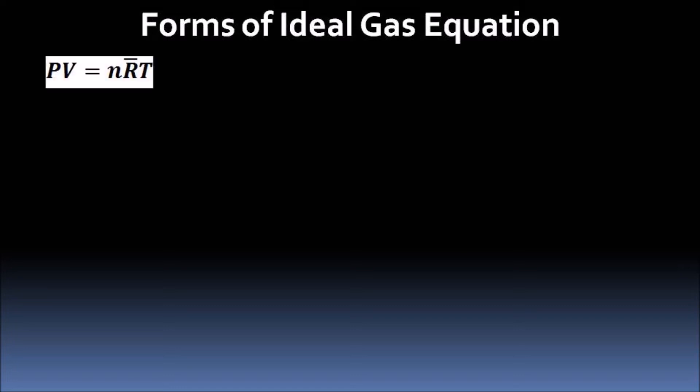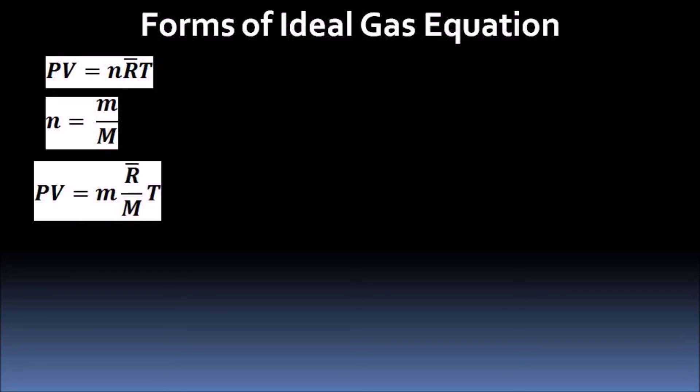We start with the original form of the ideal gas equation, PV = nRT, and substitute the value of n, the number of kilomoles. We get PV = m(R̄/M)T, where M is the molecular weight of the gas.